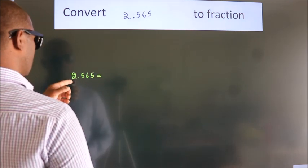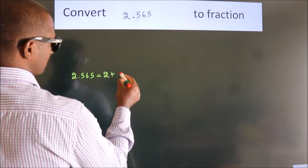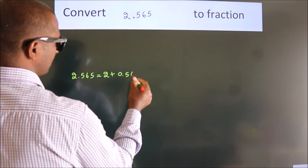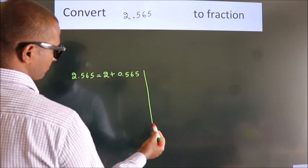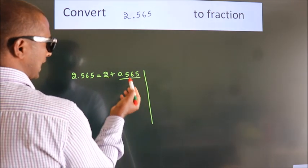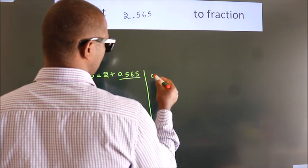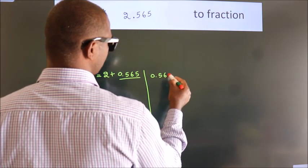First we should break this into 2 plus 0.565. Next convert this to fraction over here. So 0.565.